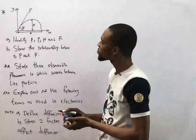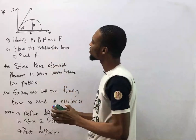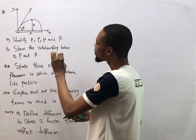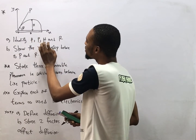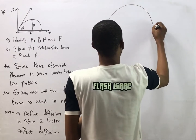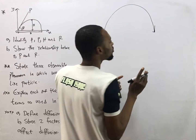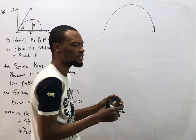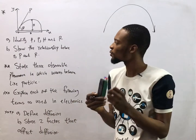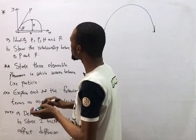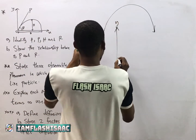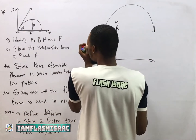Let's look at these questions. In the first question, we are given a projectile and we are asked to identify beta, p, h, and r. This is a projectile motion — when a body is thrown up and allowed to move freely under gravity, then the body returns; it is referred to as projectile motion. In this projectile, look at these points: y is the y-axis and s is the s-axis.